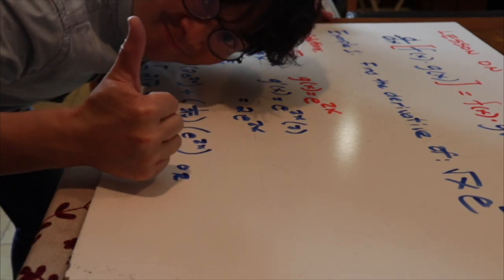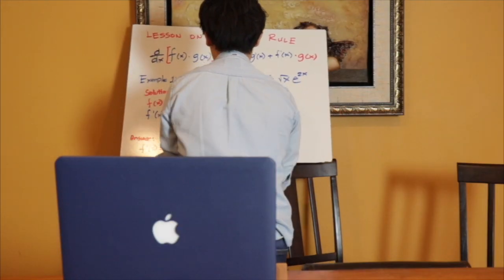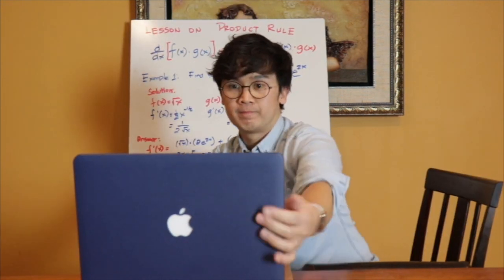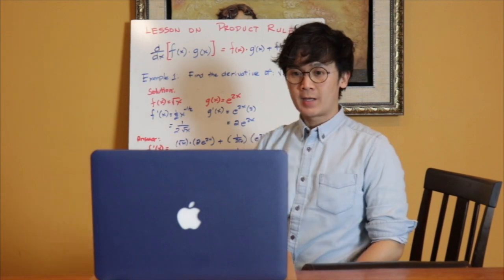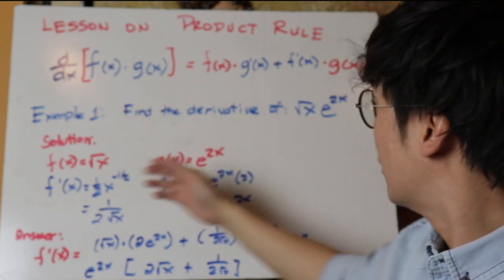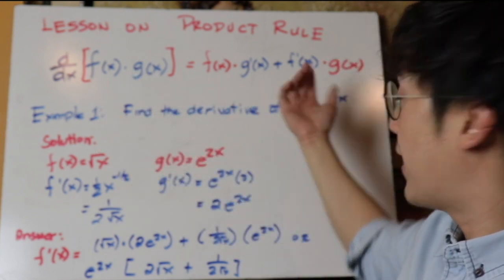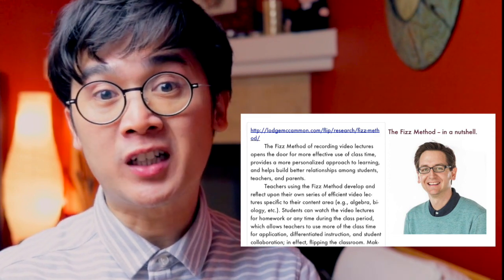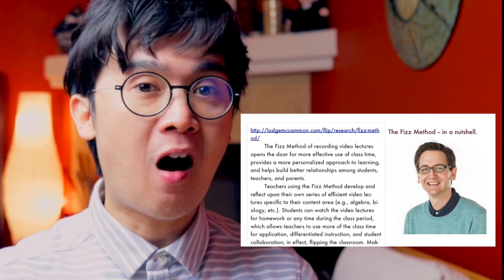The handwriting or the lecture also serves as my script so that I don't forget what I'm supposed to be saying when I'm in front of the camera. Using the available materials I have at home, I just use my computer camera, record it, and upload it to YouTube. For example, if I have f(x) and g(x), the derivative would be f(x) times g'(x) plus f'(x) times g(x). I'm not going to take all the credit on this method because I learned from Dr. McCallmon's video on his fizz method, and that was my inspiration in creating my first video on YouTube.